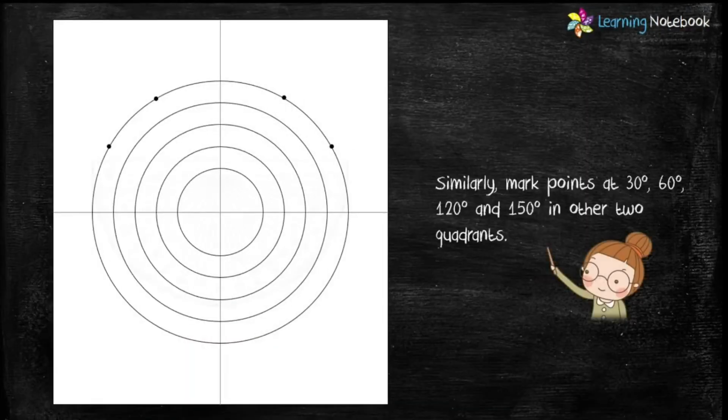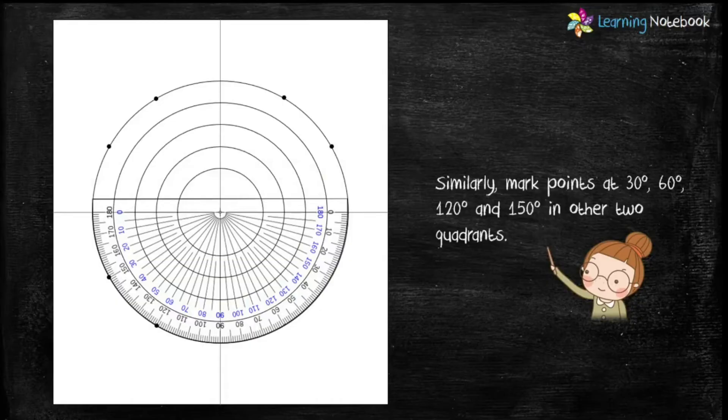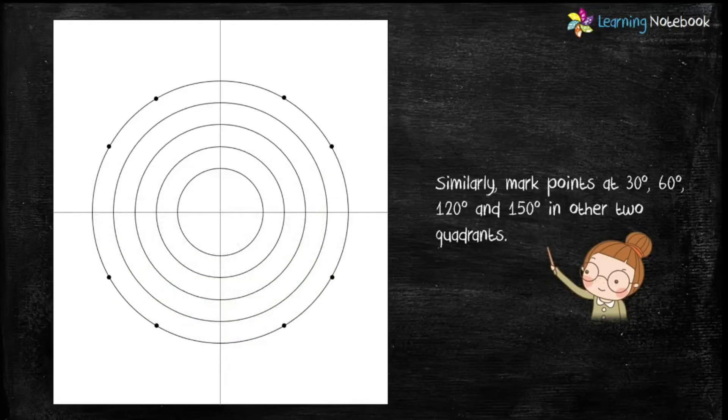In the same manner, mark points at 30 degrees, 60 degrees, 120 degrees, and 150 degrees in the other two quadrants.